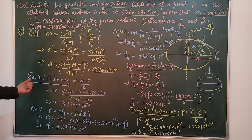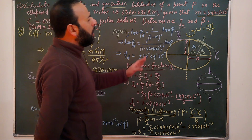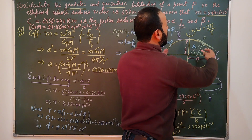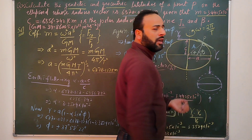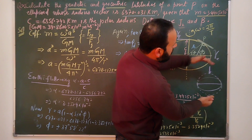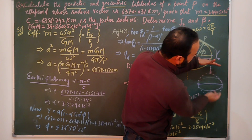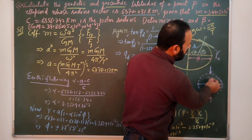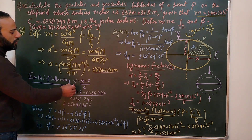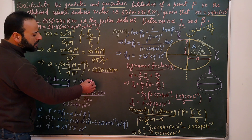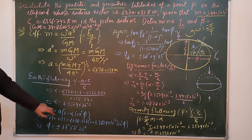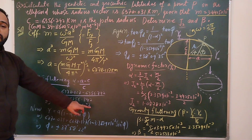Next, we calculate Earth's flattening. The Earth bulges at the equator and is flattened at the poles, so it is shaped like an ellipsoid rather than a perfect sphere. The flattening α is defined as (a − c) / a, the equatorial radius minus the polar radius divided by the equatorial radius. Substituting values gives α = 3.3529 × 10⁻³.